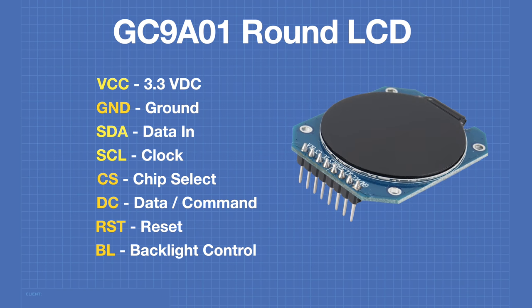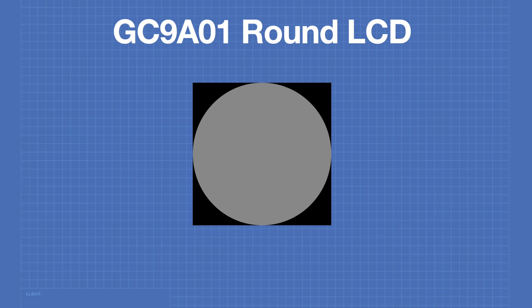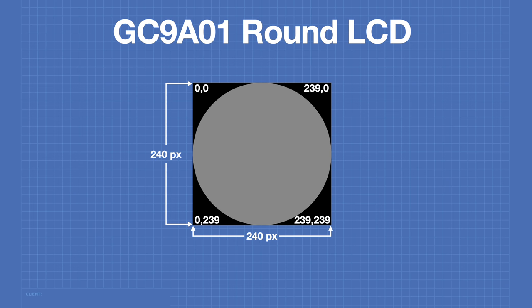There's another common version of this module with slightly different labeling on its pinout that can be used in almost an identical fashion. However, this version is only a 3.3 volt device as it does not have an onboard voltage regulator. The data in is labeled SDA and the clock is labeled SCL, but this is not an I2C device — it's an SPI device. When programming the device, you use the same coordinates you would with a square display, but keep in mind that some areas of this display are not visible because it's round.